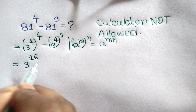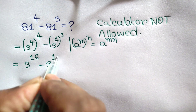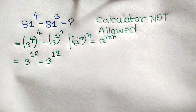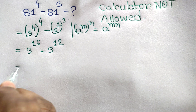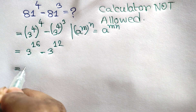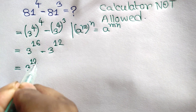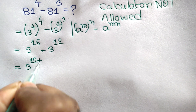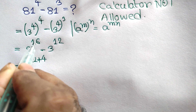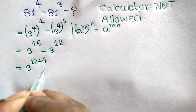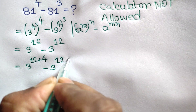We get 3 to the power 16 minus 3 to the power 4 times 3, which is 12. So the expression becomes 3 to the power 16 minus 3 to the power 12. Now 3 to the power 16 can be written as 3 to the power 12 plus 4, because 12 plus 4 is 16, minus 3 to the power 12.